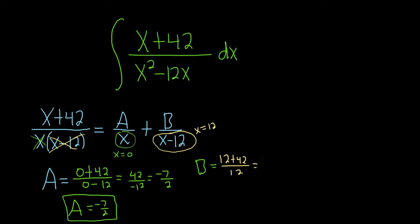This is going to be 54 over 12. 6 times 9 is 54, this will be 9. 6 times 2 is 12, this will be 2. So 6 goes into 54 9 times, 6 goes into 12 2 times. So B equals 9 over 2.